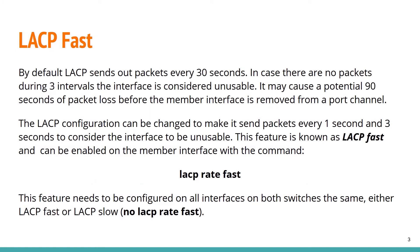Let's get started. LACP fast: by default, LACP sends out packets every 30 seconds. In case there are no packets during three intervals, the interface is considered unusable. This may cause a potential 90 seconds of packet loss before the member interface is removed from a port channel. The LACP configuration can be changed to make it send packets every one second, and three seconds to consider the interface to be unusable. This feature is known as LACP fast.